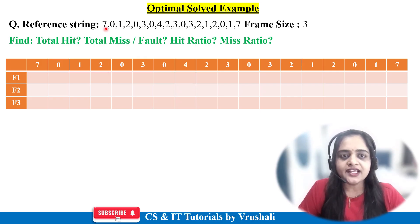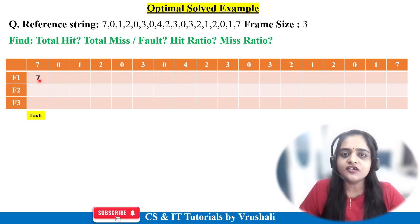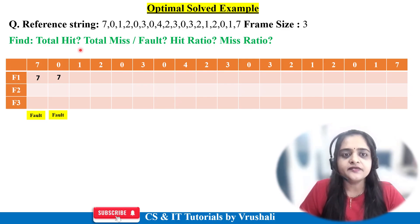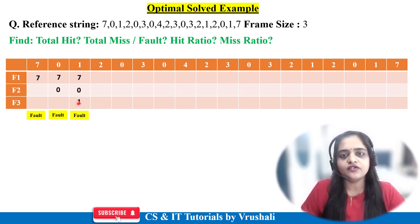Now the CPU is demanding page number 7. Page number 7 is currently not present in main memory, so this is a page fault. The operating system loads page 7 from secondary memory to main memory for execution. Next, page 0 is demanded — again not present in main memory, so page fault. Page 7 remains and the operating system adds page 0. Next, the CPU demands page 1 — not present in main memory, so page fault. Pages 7 and 0 remain, and the operating system adds page 1.